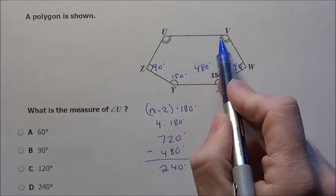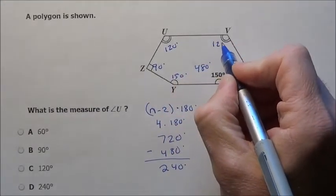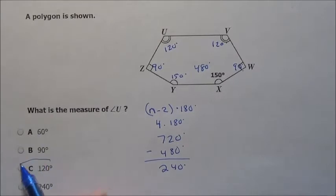This and this are the same. So each one of those has to be 120 degrees, which is option C.